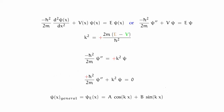We see that k squared is defined as 2m(E minus V) over h-bar squared. So here is the general solution to the time independent Schrödinger equation for an arbitrary particle in an arbitrary system. In order for this to describe the current system — the infinite potential well — we need to apply the boundary conditions.